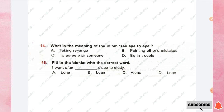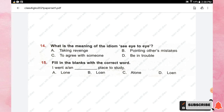Question number fourteen: what is the meaning of the idiom 'see eye to eye'? Options are taking revenge, pointing out others' mistakes, to agree with someone, and to be in trouble. The right answer is option C, to agree with someone.